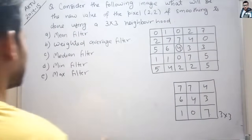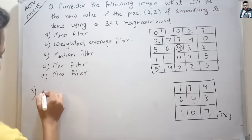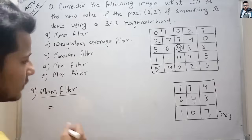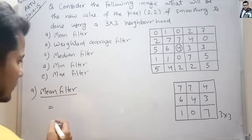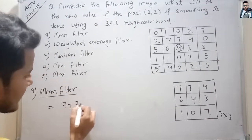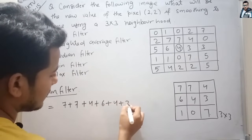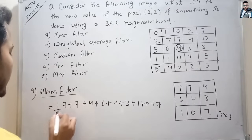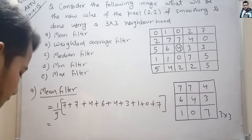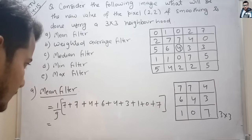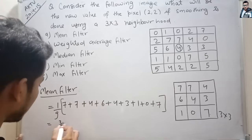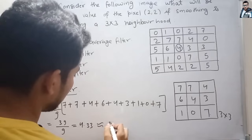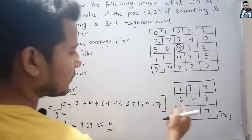The coordinate of this pixel is 2,2. First, after applying the mean filter, the new value will be equal to the mean of all pixel values in the neighborhood. So this equals 7 + 7 + 4 + 6 + 4 + 3 + 1 + 0 + 7, divided by the total number of pixels, which is 9. This equals 39 divided by 9, which is 4.33, approximately equal to 4. So by using the mean filter, the value of this pixel is 4.